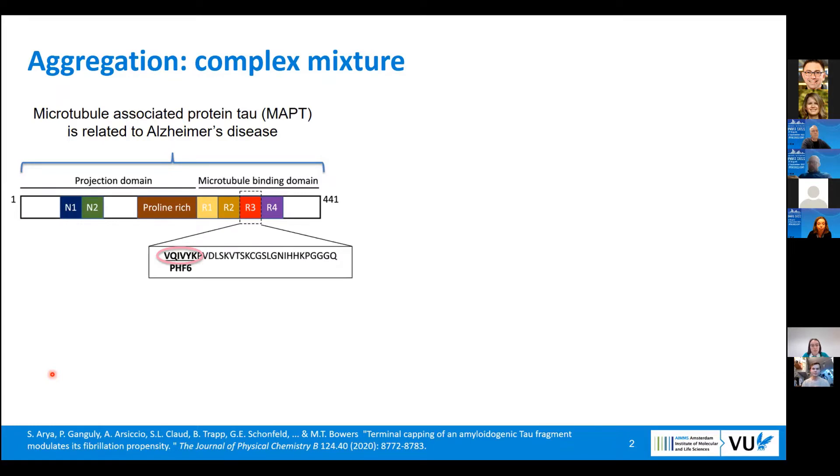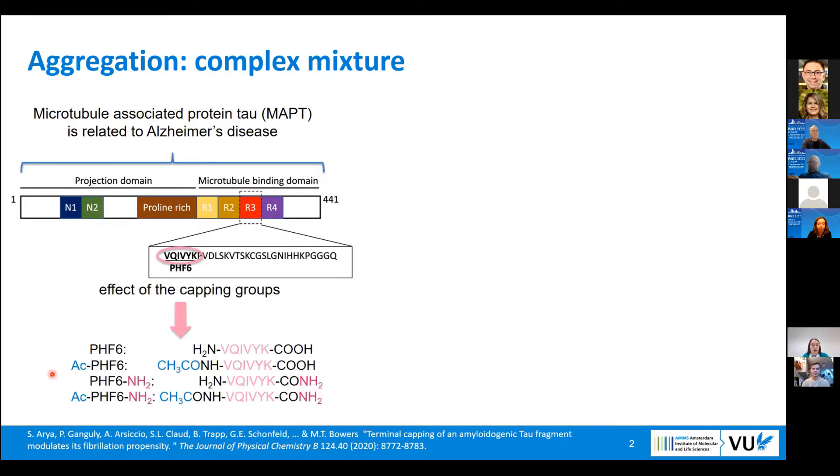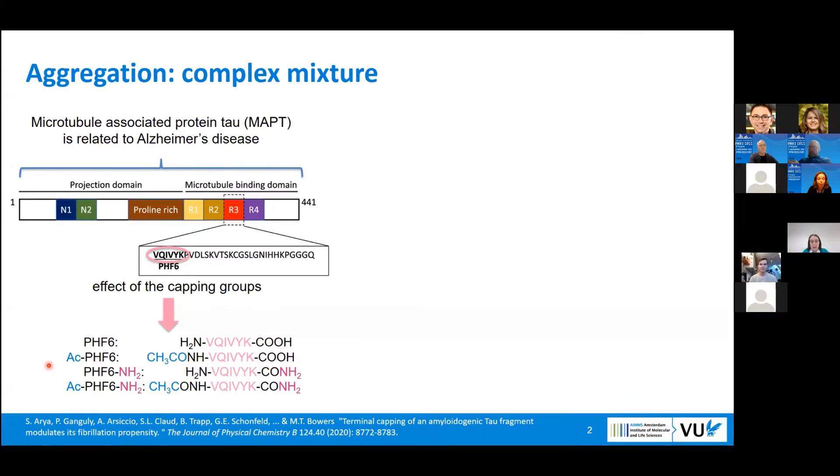Named the PHF6, that makes up the core of amyloid, of tau protein's amyloid. In my research, we want to follow and investigate how different capping groups influence aggregation of this peptide, because it's often neglected in research of peptide aggregation.